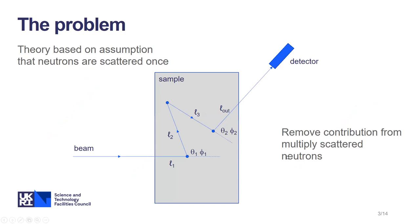The reason we need to worry about multiple scattering is that most scattering theory used to extract science from scattering measurements is based on the assumption that neutrons or x-rays are scattered just once in the sample on their journey from the beam through to the detector. That means we need to remove neutrons that have been scattered more than once, such as the doubly or triply scattered neutron path shown on screen.